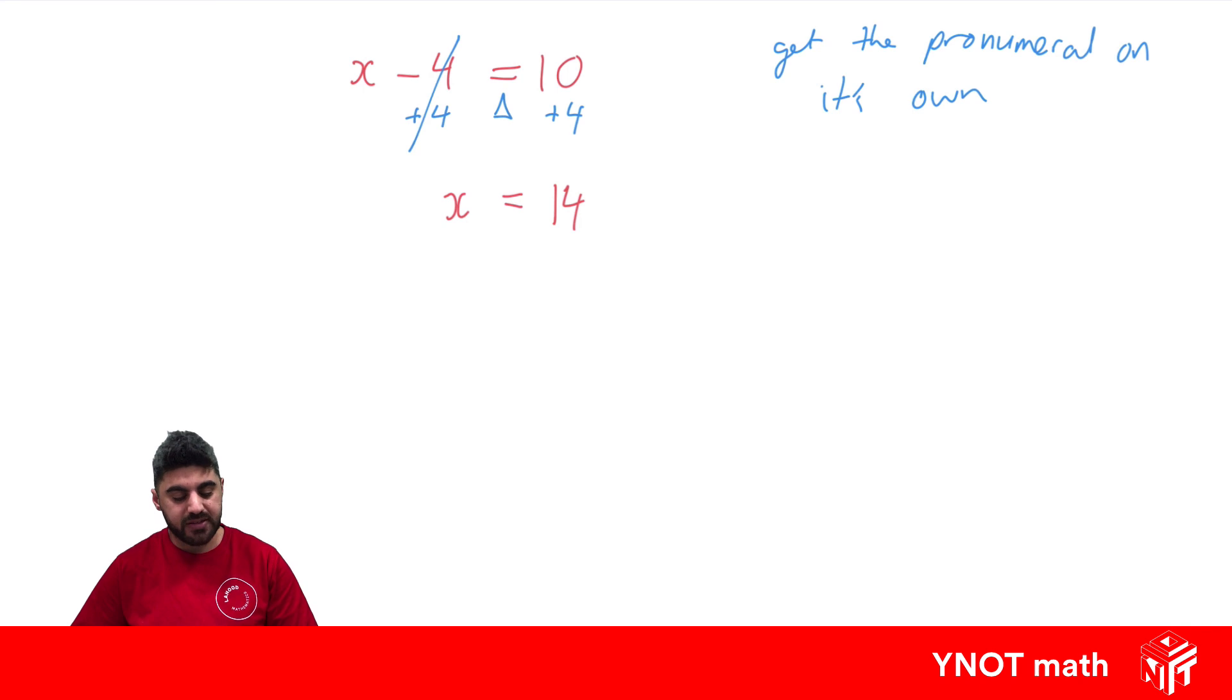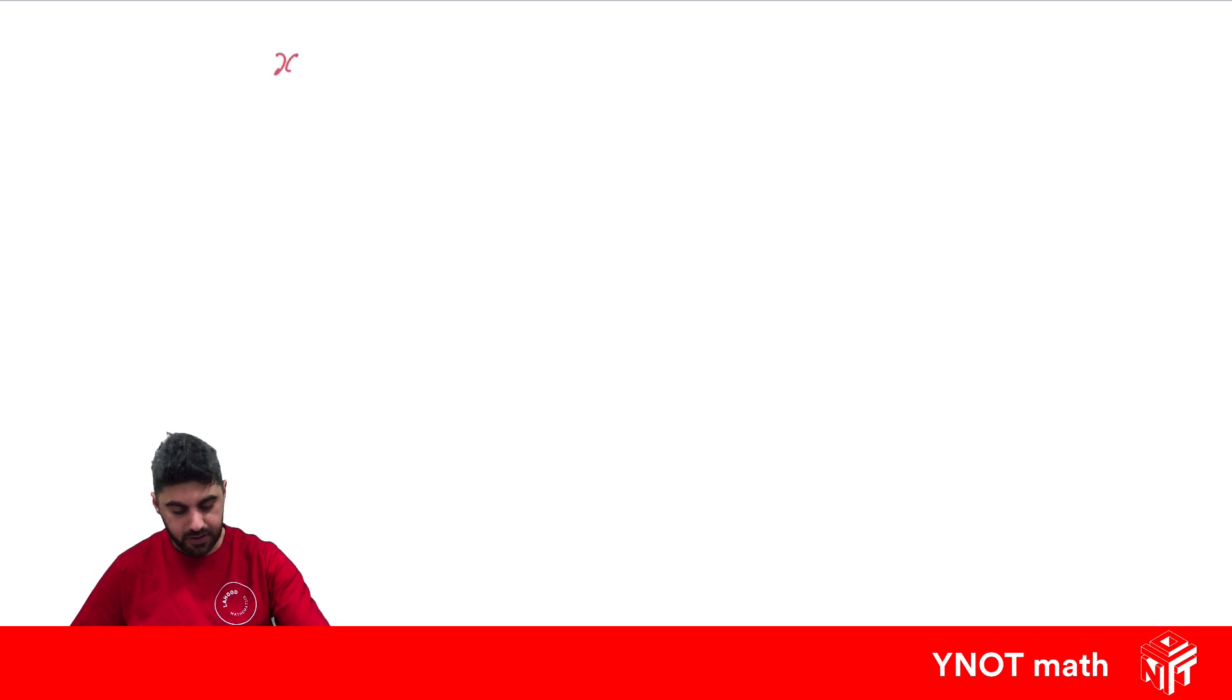These are called one-step equations because it only takes one step to actually solve them. Let's look at a few more. x plus 3 equals 10. We're trying to get that pronumeral on its own. The plus 3 is in the way of it being on its own, so we're going to minus 3. Whatever you do to one side you've got to do to the other side because 3 minus 3 will be 0. Equals under equals, on the left hand side of the equal sign we're left with just x, and 10 minus 3 is 7, so x has to equal 7. You can double check: does 7 plus 3 equal 10? It does.